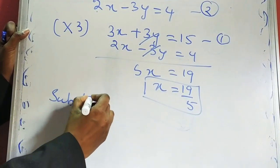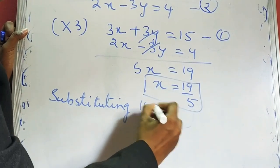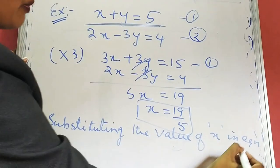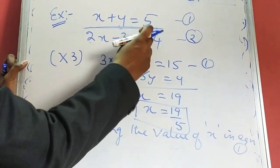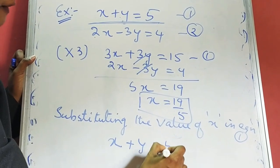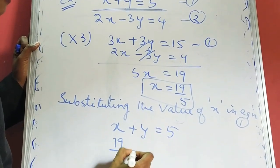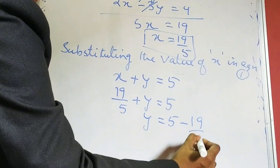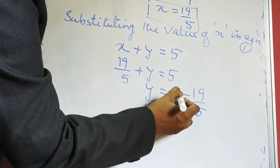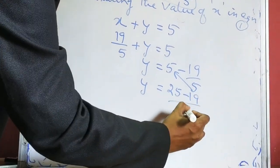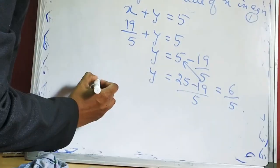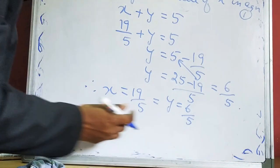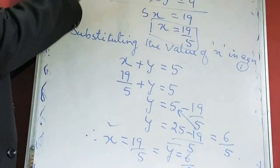Now we substitute the value of x into equation 1. Equation 1 is x plus y is equal to 5. So 19 by 5 plus y is equal to 5. Therefore y is equal to 5 minus 19 by 5, which gives us 25 minus 19 all over 5, equal to 6 by 5. Therefore x is equal to 19 by 5 and y is equal to 6 by 5. This is how we use the elimination method.